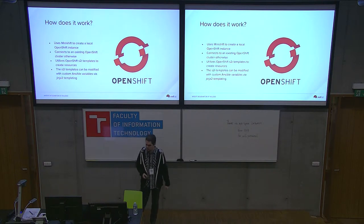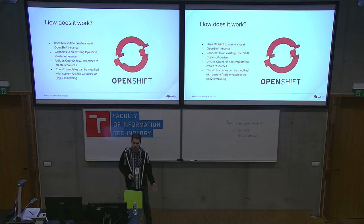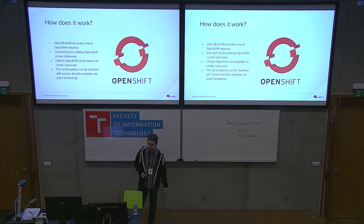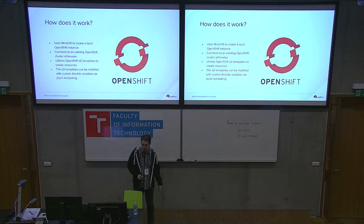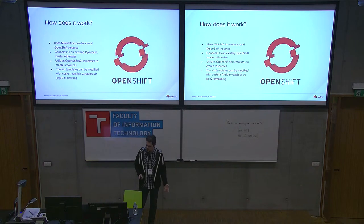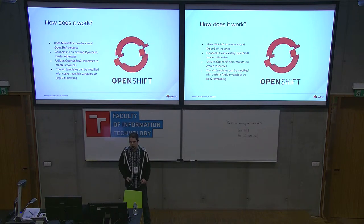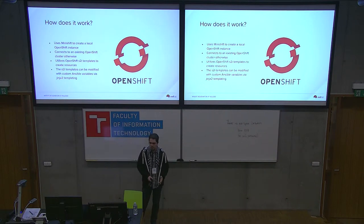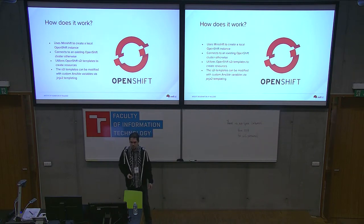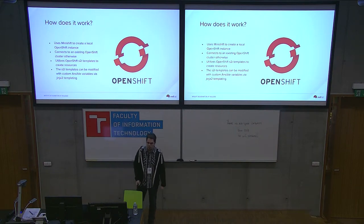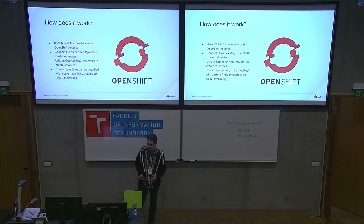The main point of CI Env Setup is to set up a local or external OpenShift instance with all the infrastructure that we need. For that, we utilize OpenShift source-to-image templates to create resources such as services, routes, images, deployments, build configs, and stuff like that. The added flexibility we bring to the table is the ability to customize those S2I templates, so you can use your templates in a variety of ways for different usages. With Jinja2 templating, you can inject your Ansible variables that you define at the beginning to have a different version of your environment for different usages with minimal effort and minimal change.